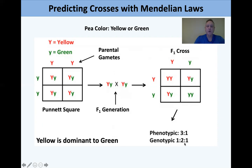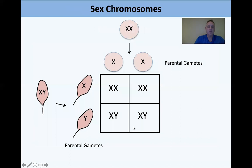When you have three that are yellow, you can't initially predict which are homozygous dominant big-Y big-Y versus heterozygous big-Y little-y, because both are yellow since big-Y is dominant to little-y.